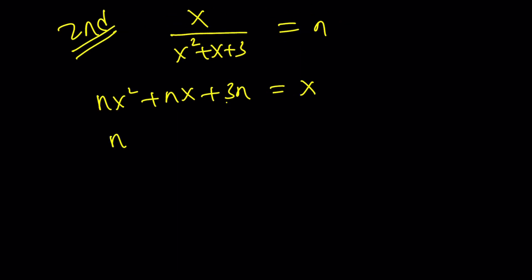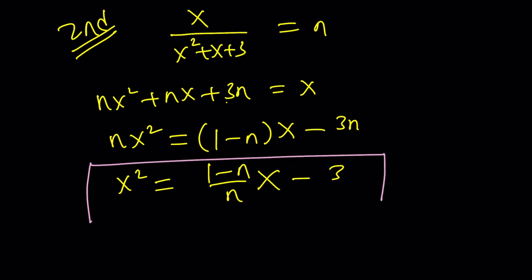This time, differently. When I isolate the x squared, notice 1x minus nx. Now, if you divide everything by n. Great. This gives us a formula, x squared in terms of x.